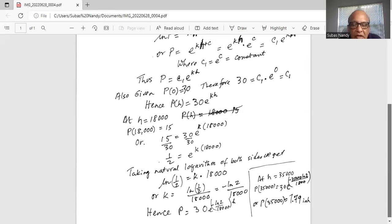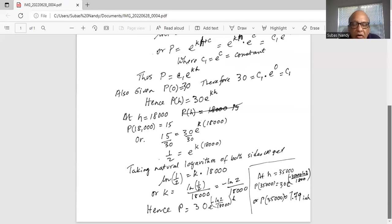Now at h equal to 35,000, we will plug in 35,000 for h in the exponent for the natural number. So we get p at 35,000 is equal to 30 times e to the minus ln 2 times 35,000 divided by 18,000. If you crunch the number in the calculator, it is approximately 7.79 inches.